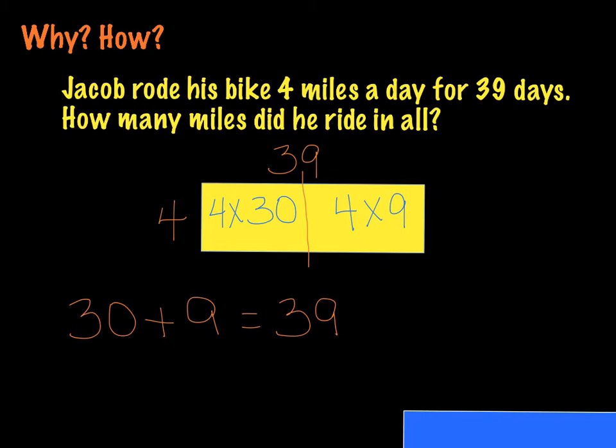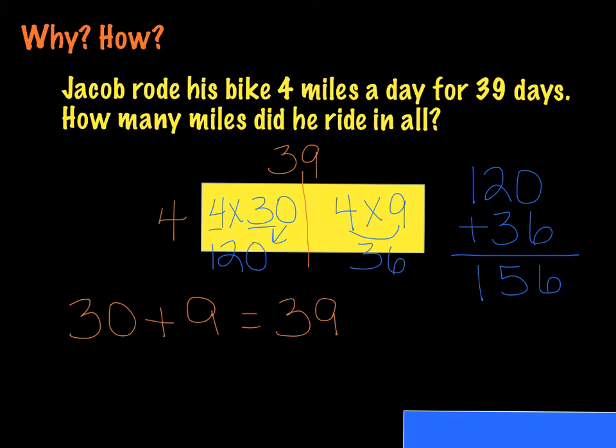Now, when we look at 4 times 30, we can think of that as an extended multiplication fact. Do our basic fact, 4 times 3, which is going to give us 12. And then we're going to add our 0 in, which is going to give us 120. And then we've got a basic fact over here, 4 times 9, that gives us 36. We take the 120 and the 36, and we add those together, and we get our answer to 4 times 39, which happens to be 156.